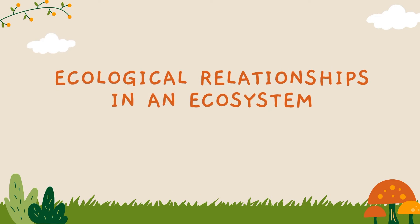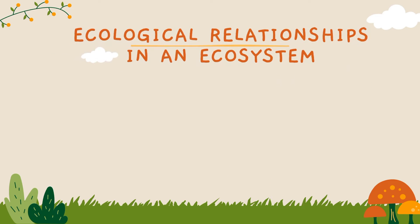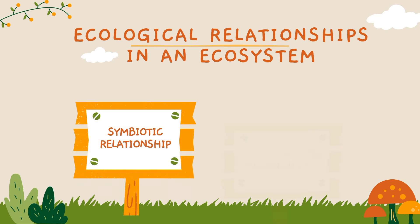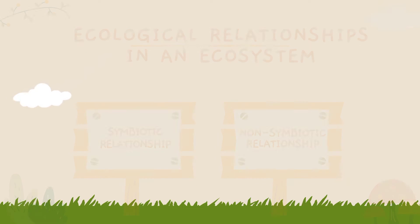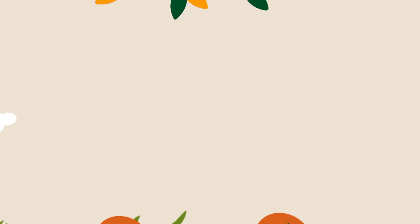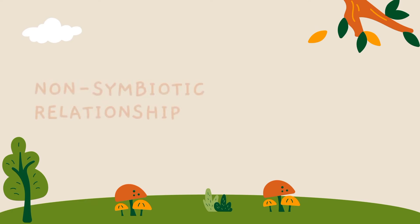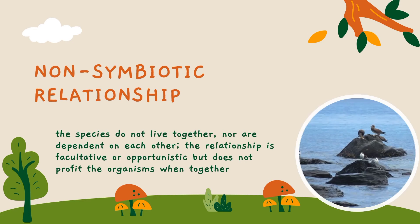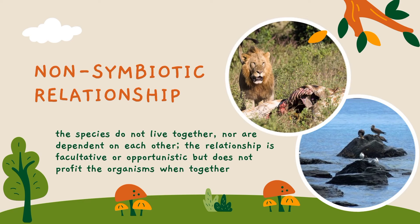Ecological relationship can be symbiotic or non-symbiotic. What do you think is the difference between symbiotic and non-symbiotic relationship? In non-symbiotic relationship, the organisms do not live together, nor are dependent on each other. The relationship is opportunistic but does not profit the organism when together.